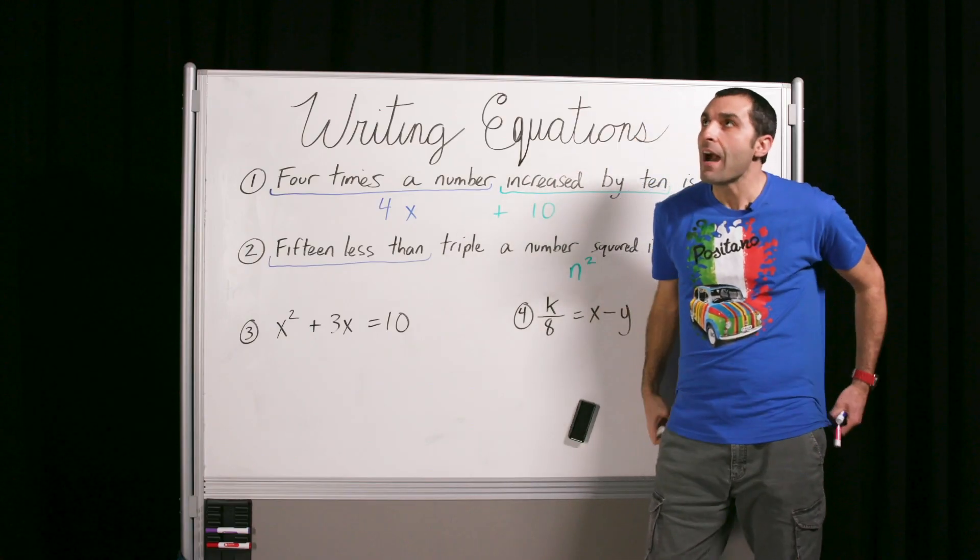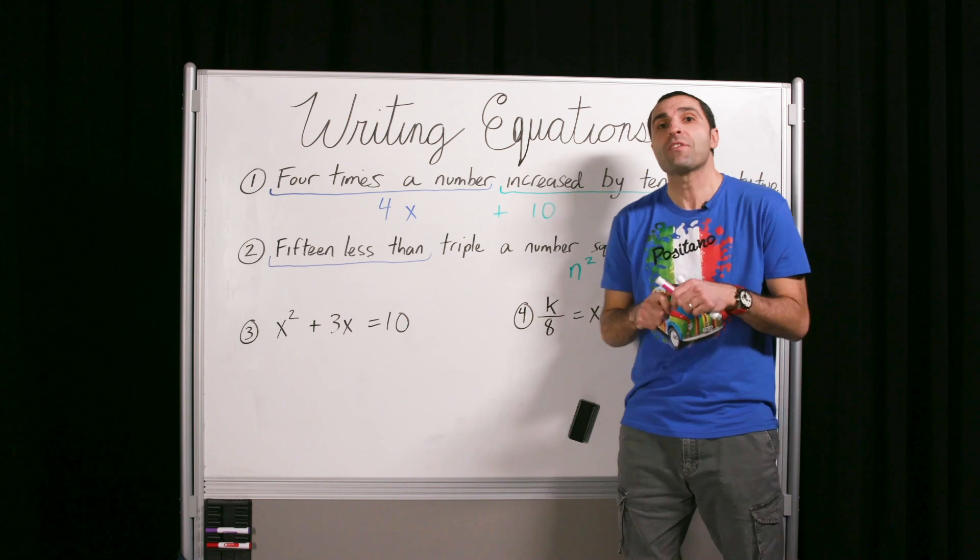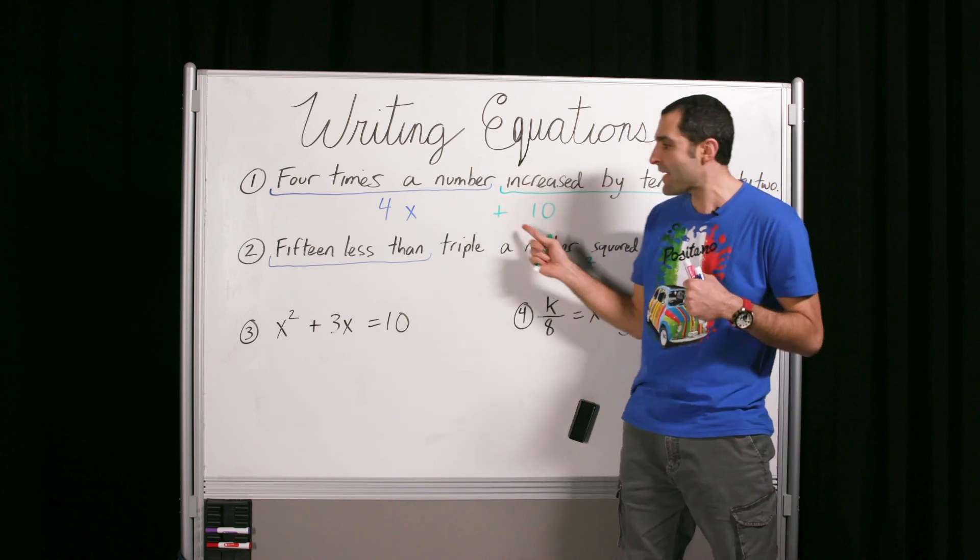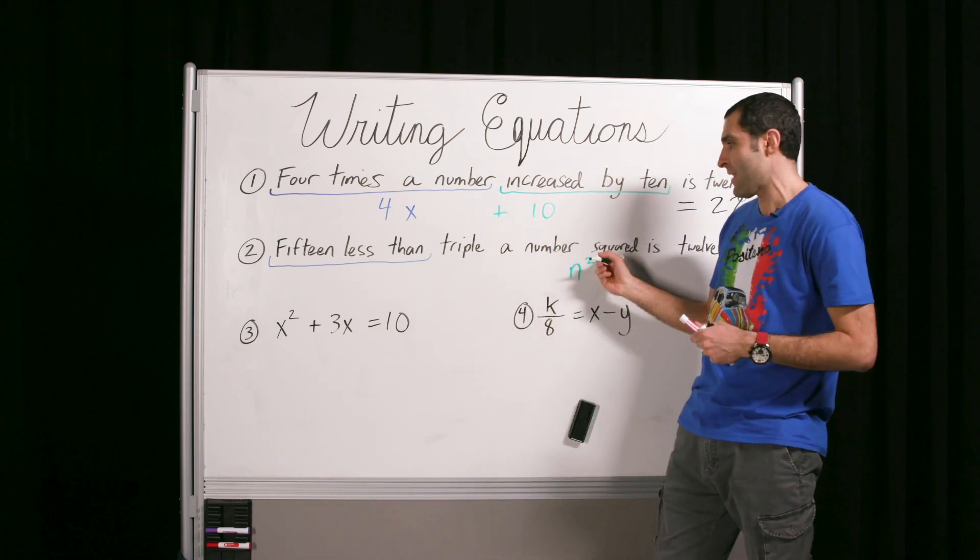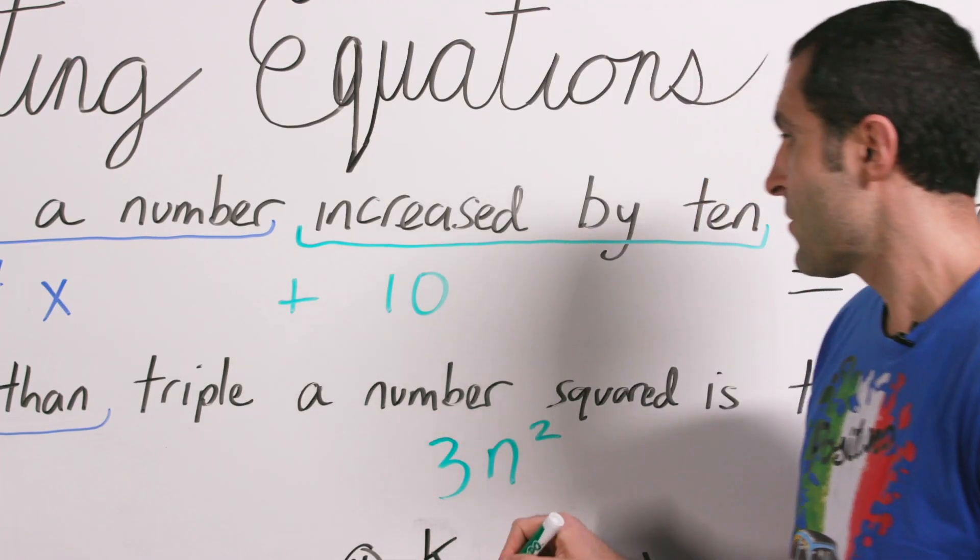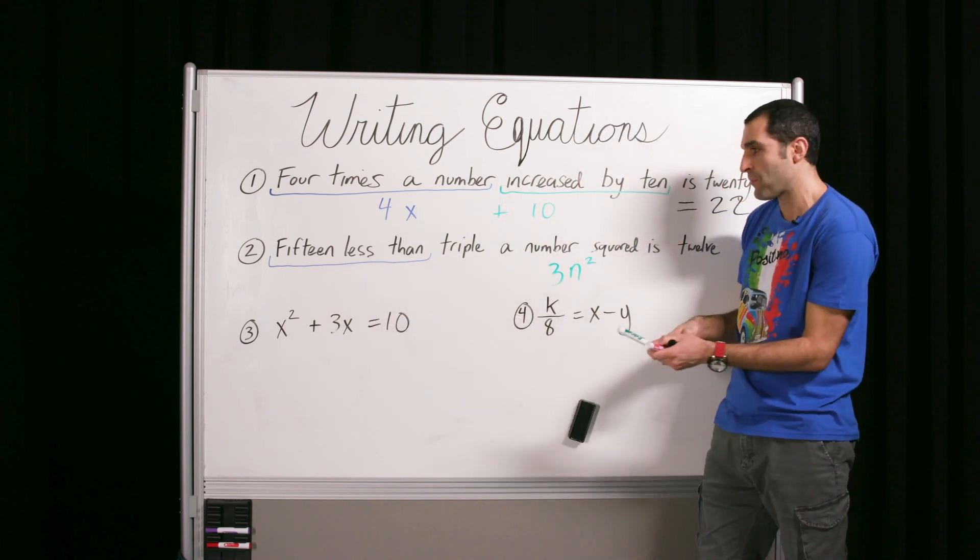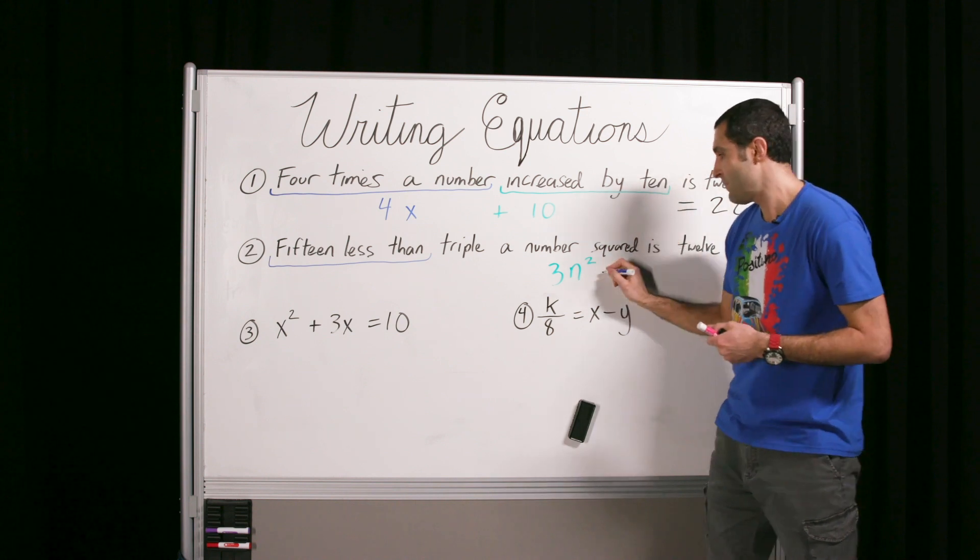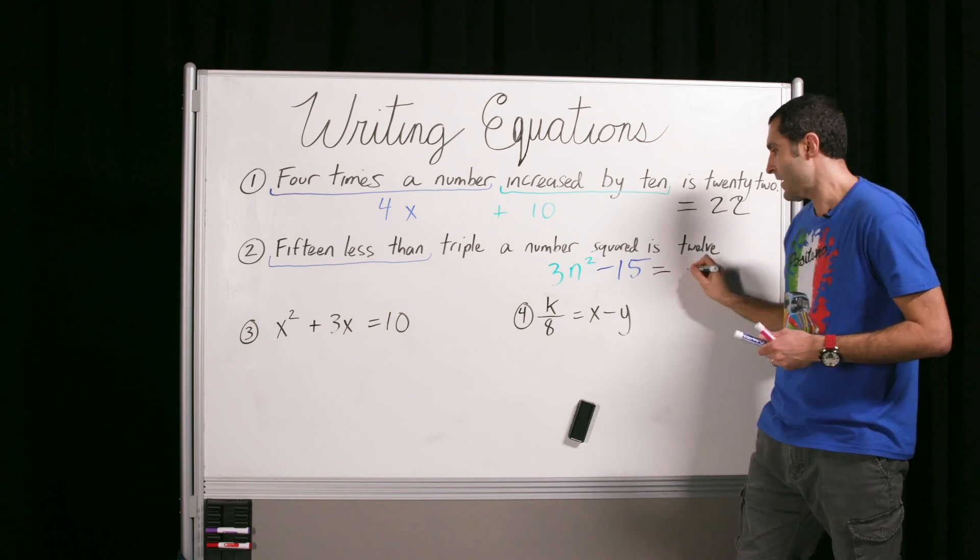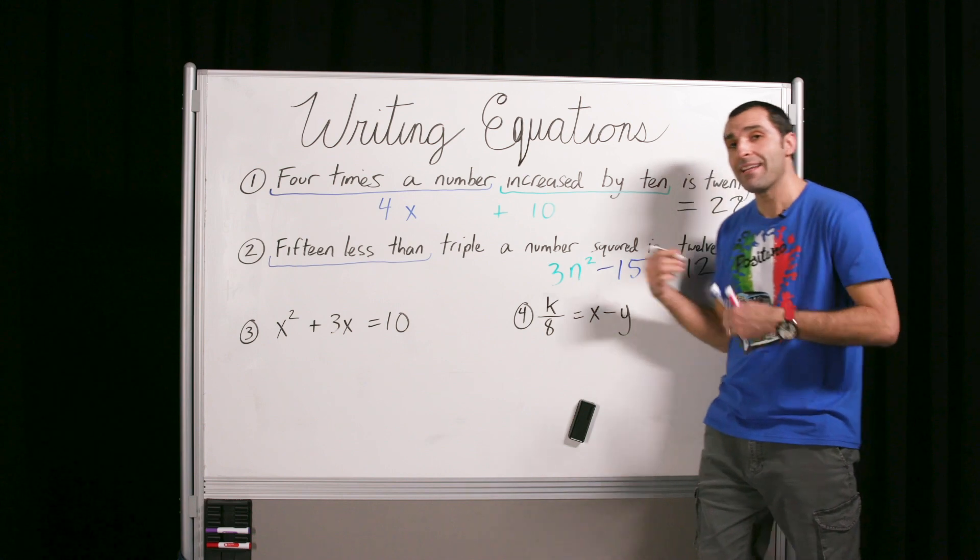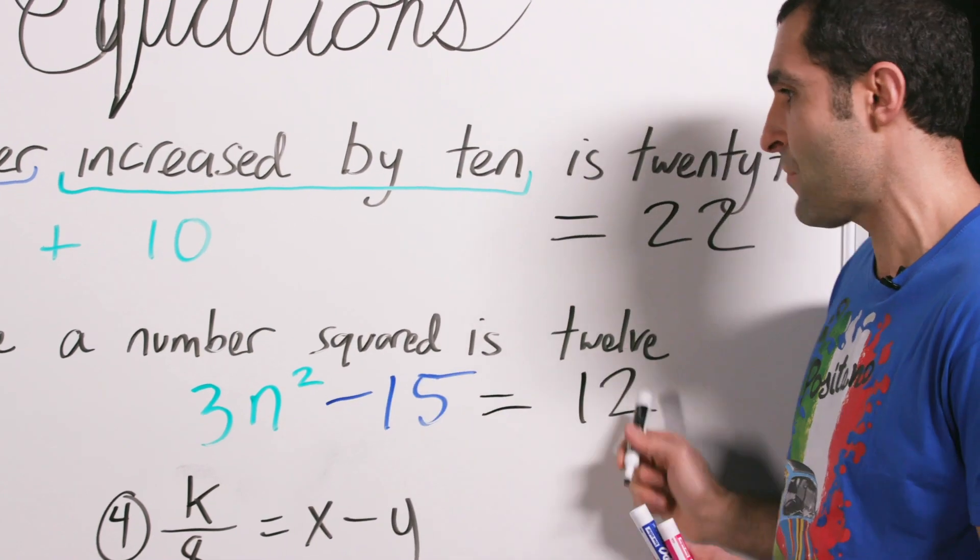So a number squared would be n and then squared. And then triple that. So when I say I have triple the amount, I want a chocolate cake with triple the amount of chocolate, that would mean three times. Whenever that happens, you're welcome to use these real world examples that speak to you. Triple of something means three times that thing. So there's triple a number squared. 15 less than this. So now we're bringing in our blue friend and gravity. Minus 15. And then we have back to is. And 12 translates directly. So now we can look at it in hindsight. 15 less than three times a number squared or triple a number squared is 12.